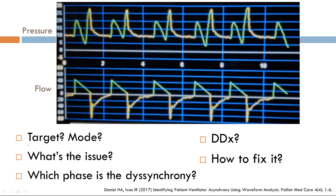Looking at the flow scalar, I can see it looks like a decelerating ramp — something the operator has set. Therefore, flow is my target variable. As a result, this mode of ventilation is volume control ventilation.